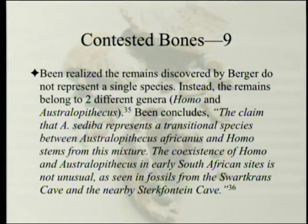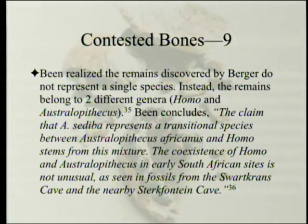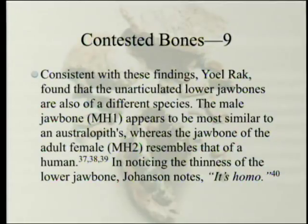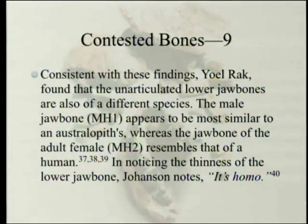Bean realized that the remains discovered by Berger do not represent a single species; instead, they belong to two different genera — Homo and Australopithecus. Bean concluded: 'The claim that Australopithecus sediba represents a transitional species between Australopithecus africanus and Homo stems from this mixture.' The co-existence of Homo and Australopithecus in early South African sites is not unusual, as seen in fossils from Swartkrans Cave and the nearby Sterkfontein Cave. Consistent with these findings, Yoel Rak found that the unarticulated lower jawbones are also of a different species — the male jawbone (MH1) appears most similar to an Australopith, whereas the jawbone of the adult female resembles that of a human.